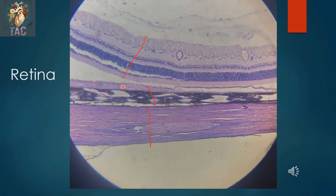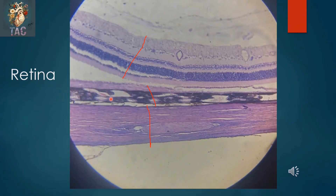Another slide in which you can see the retina, the choroid, and the sclera. In the retina you can see the retinal pigment epithelium, the layer of rods and cones, the outer limiting membrane, outer nuclear layer, outer plexiform, inner nuclear, inner plexiform, the layer of ganglionic cell fibers, the optic nerve fibers, and the inner limiting membrane. Here you can see the three layers of the choroid with large blood vessels, the choriocapillary layer, and then the sclera.